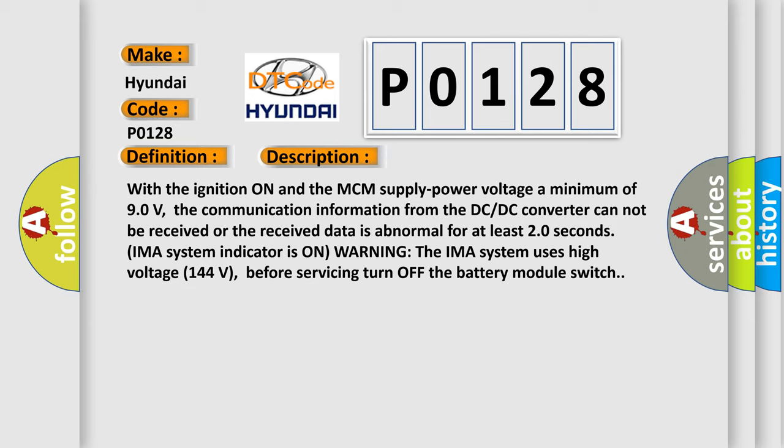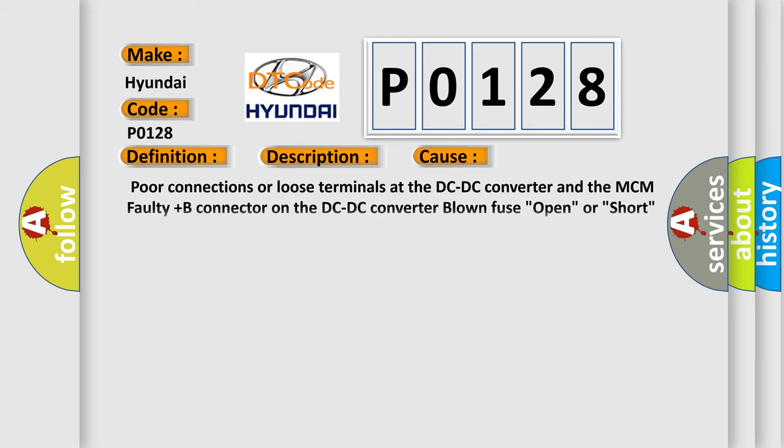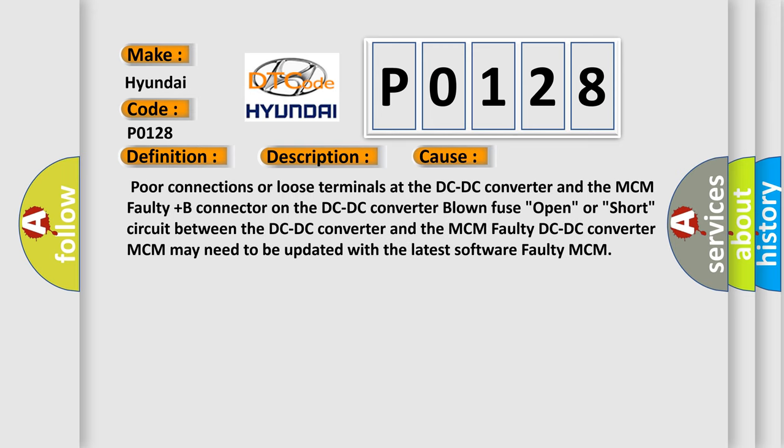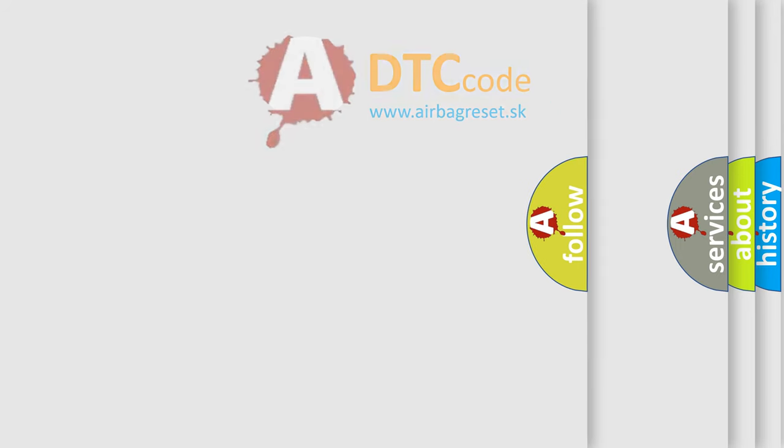The IMA system uses high voltage of 144 volts; before servicing, turn off the battery module switch. This diagnostic error occurs most often in these cases: poor connections or loose terminals at the DC-DC converter and the MCM; faulty plus-B connector on the DC-DC converter; blown fuse; open or short circuit between the DC-DC converter and the MCM; faulty DC-DC converter; MCM may need to be updated with the latest software; or a faulty MCM.